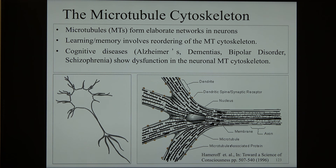I want to acknowledge the visionary work of Stuart Hameroff, going back to the 1970s — half a century. He wrote an amazing book called 'Ultimate Computing' in 1987, way before we talked about quantum computing, focused on microtubules. Microtubules are involved in, or at least correlated with, almost all neurodegenerative diseases. Damage to the microtubule cytoskeleton is implicated in Alzheimer's — tauopathies, disconnection of microtubules, deterioration of neurons. Bipolar disorder, dementia, and schizophrenia all have one thing in common: cytoskeleton impairment.